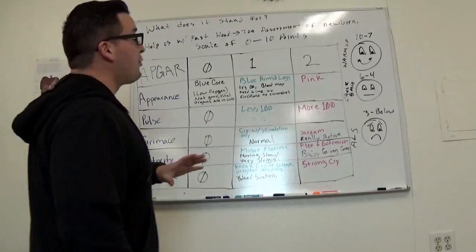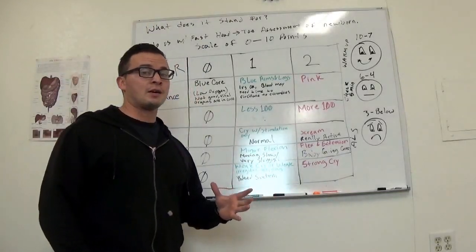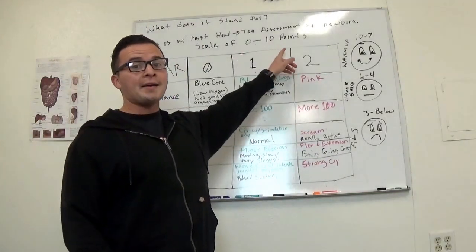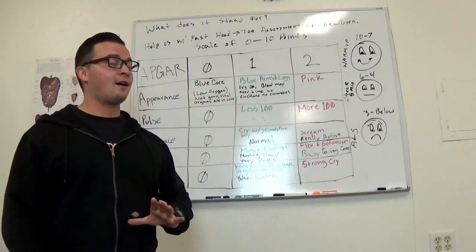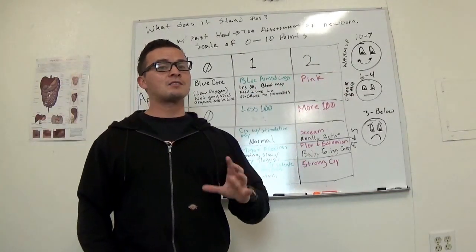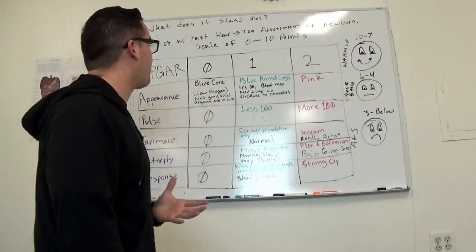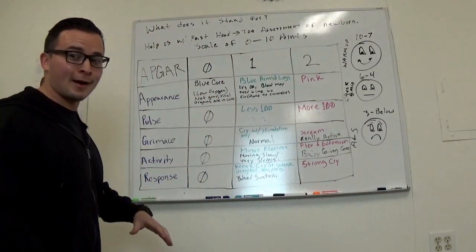So the lowest score you can get on the APGAR scale is 0. The highest is 10. It's really rare for kids to get 10. Six, seven, that's more normal from what I know. So let's go ahead and break this down.